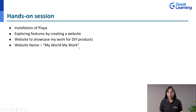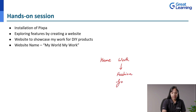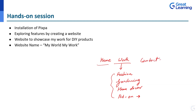Before creating the website, I'll outline its structure. The website will have three main tabs: Home, Work, and Contact. Under the Work tab, there will be sub-pages — Fashion, Gardening, Home Decor, and Add-ons, for anything else I want to publish outside those main categories. So the navigation will be: Home, Work (with four sub-pages), and Contact.